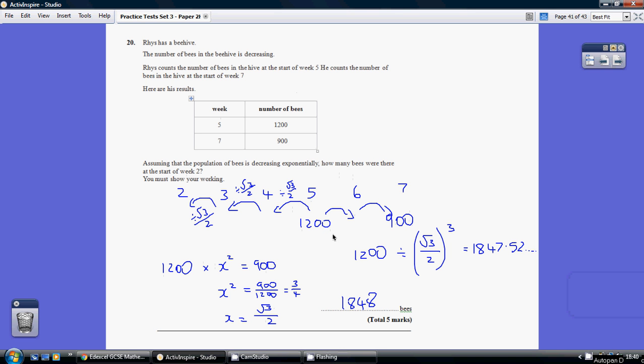We were multiplying by root 3 over 2 to decrease the number of bees going forwards. So we're going to divide by root 3 over 2 to get the number of bees going backwards in time, dividing by root 3 over 2 to the power of 3, because we've got 3 jumps: 1, 2, 3. Doing that on your calculator, you get this number of bees.